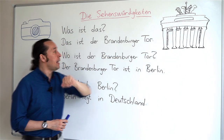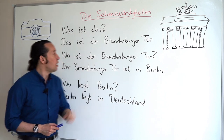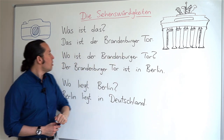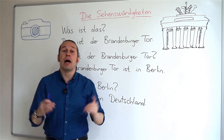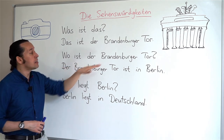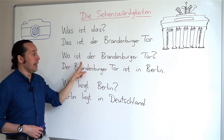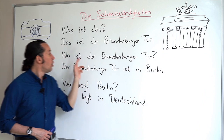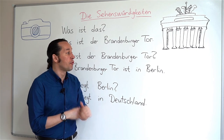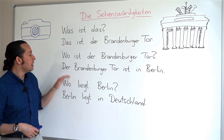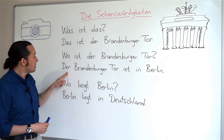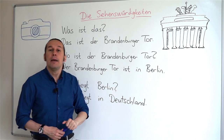This is the Brandenburger Gate — das ist der Brandenburger Tor. The next question is: where is the Brandenburger Gate? I'll say 'wo ist', where 'wo' stands for 'where'. Wo ist der Brandenburger Tor? And the answer: der Brandenburger Tor ist in Berlin — the Brandenburg Gate is in Berlin.